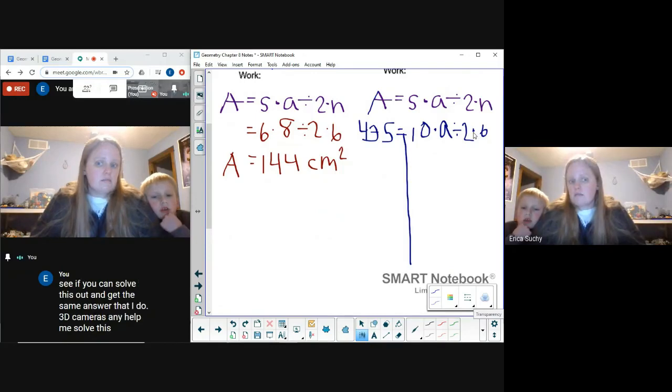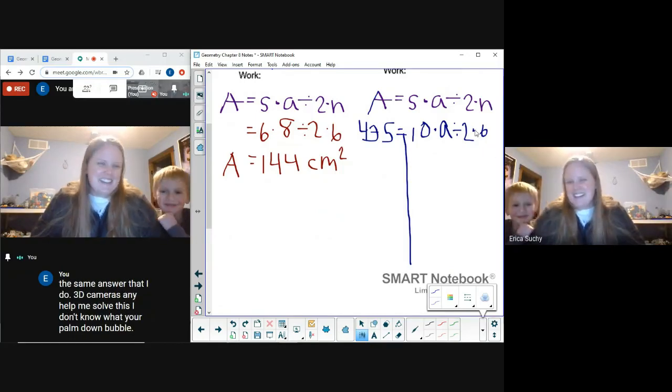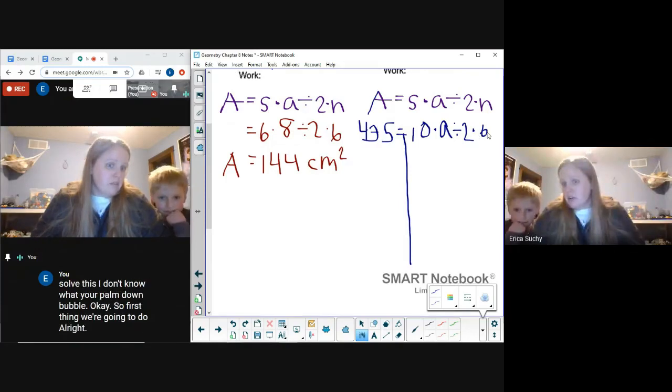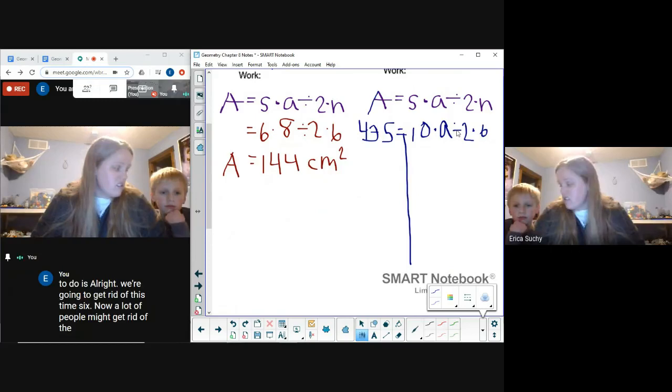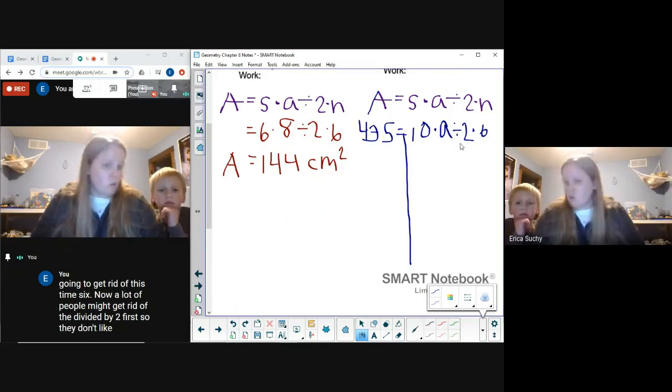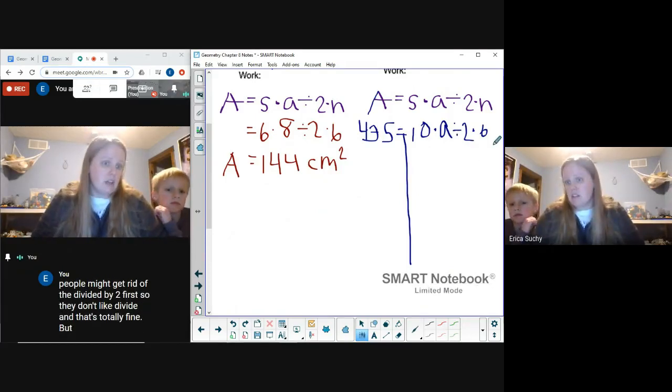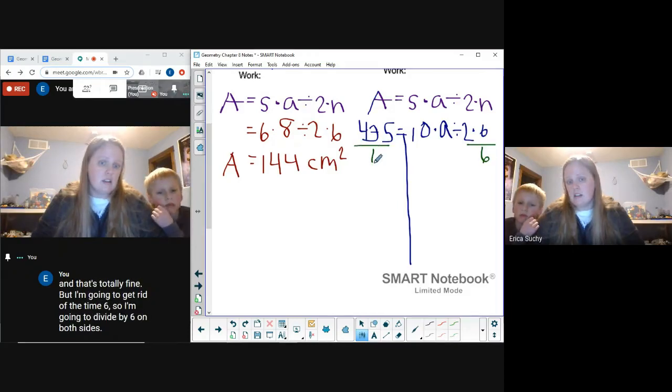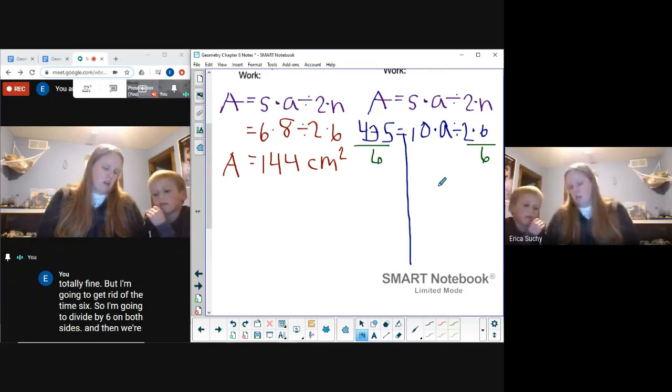All right, so first thing we're going to do is we're going to get rid of this times 6. Now a lot of people might get rid of the divide by 2 first because they don't like divide, and that's totally fine. But I'm going to get rid of the times 6, so I'm going to divide by 6 on both sides, and then we're going to use our calculator.